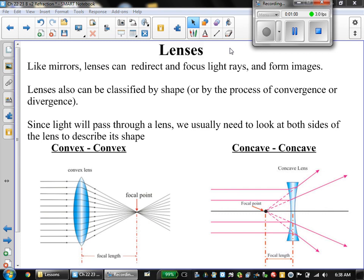It turns out with lenses, if things happen on the other side of the lens, we treat that as positive because that's what it's supposed to do. Therefore, if something happens on the same side of the lens, we'd have to treat it as negative.